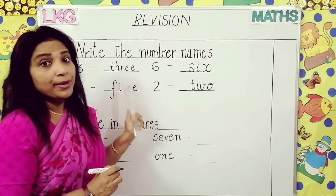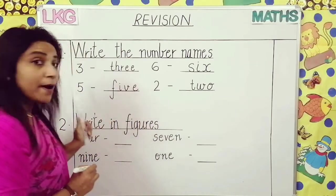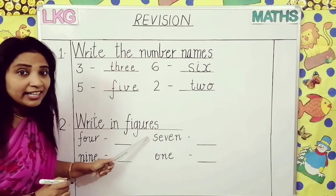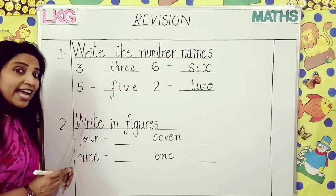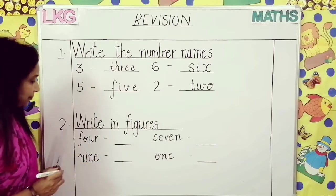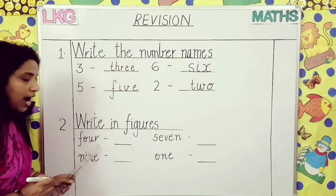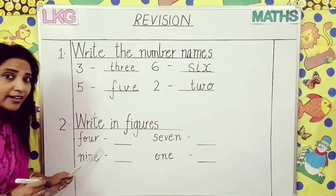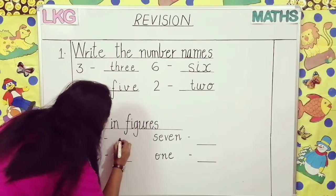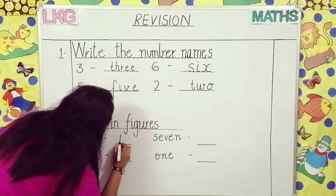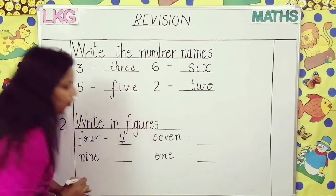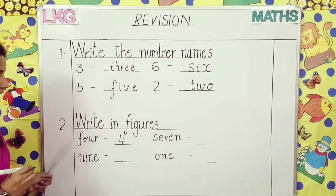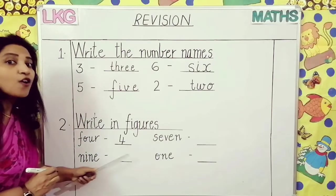You have to revise this topic at home. Now come to the next topic: write in figures. F-O-U-R. What is this? Four. We will write the figure of F-O-U-R — four. This is four, F-O-U-R.